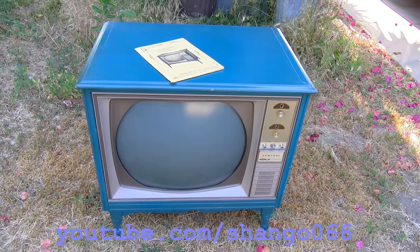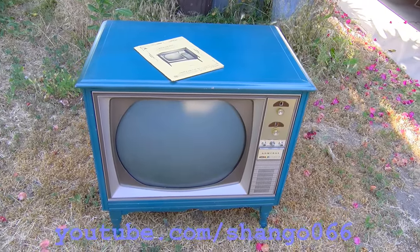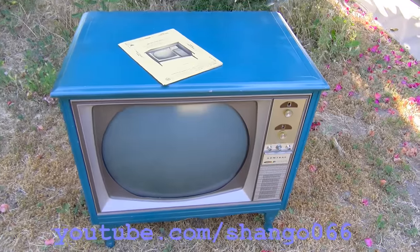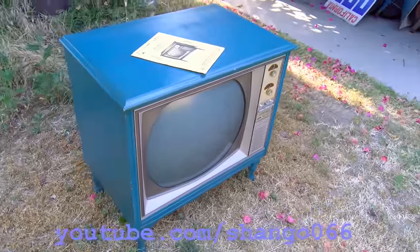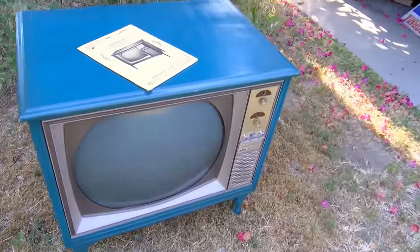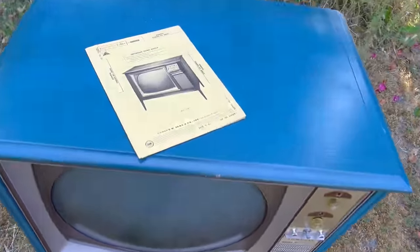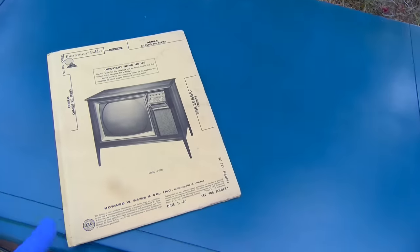1965 Admiral Color Roundy television, a vintage television painted a greenish teal. This TV uses the D11 series chassis.